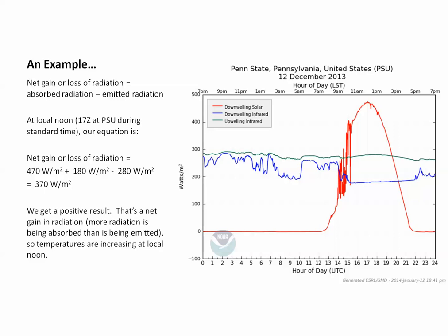There are other factors that impact temperature, but we're going to ignore those for the sake of this discussion and focus on radiation's contribution to temperature trends. On this particular day at this time, more radiation is coming in than is going out, so there's a net gain and temperatures would be increasing. Note that there's a long period where incoming solar radiation is zero — that corresponds to nighttime hours when the sun's not up. If you were doing a calculation at nighttime, your incoming solar value would be zero, and you'd be looking at downwelling infrared versus upwelling infrared.